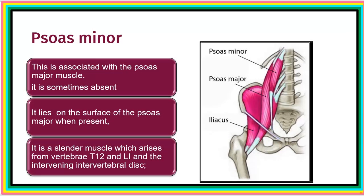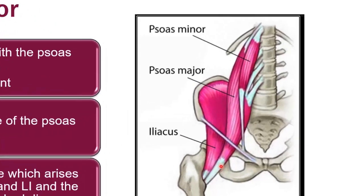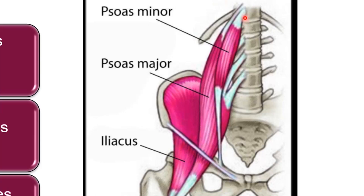Now we are done with psoas major; we'll look at psoas minor. We had seen psoas minor earlier in this lecture. This muscle is very well associated with psoas major — it is found lying on top of psoas major. A number of times this muscle is absent; it lies on the anterior surface of psoas major whenever it is present.